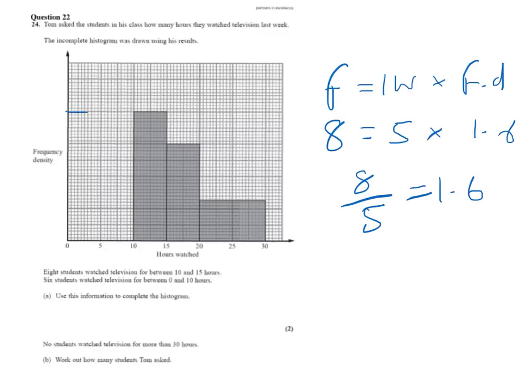So you'll see that's on the 8th square. We'll write the 1.6 down for the frequency density. And we can use that to finish off. Now I'm told that six students watched television between 0 and 10 hours. So we've got six students between 0 and 10. Well, that interval width is 10. So it's 10 times 0.6 then.